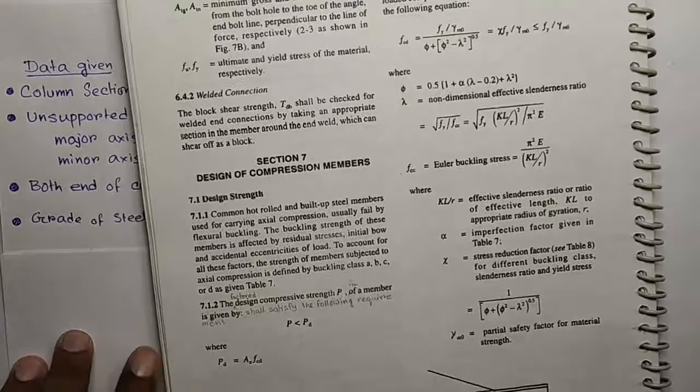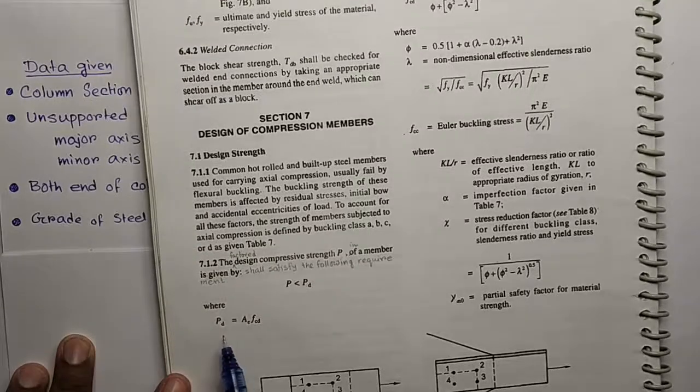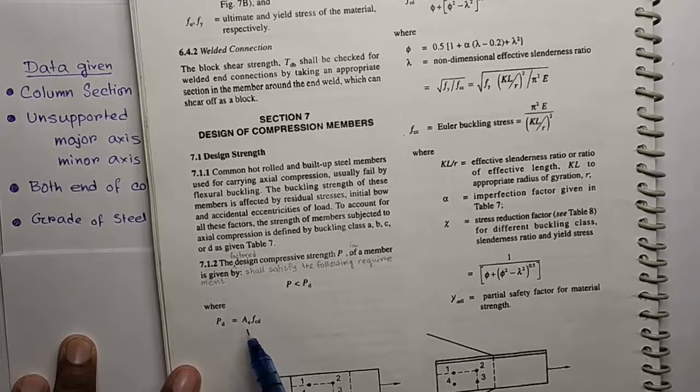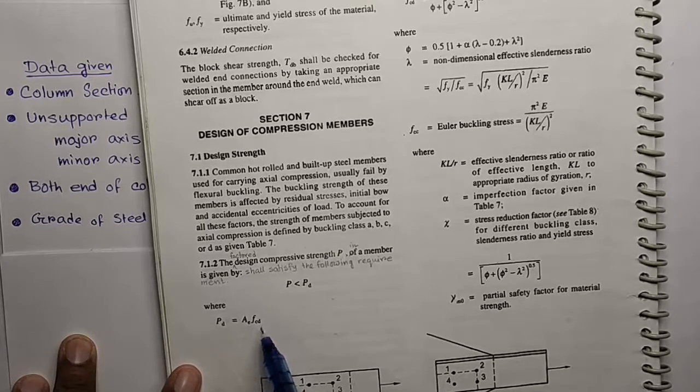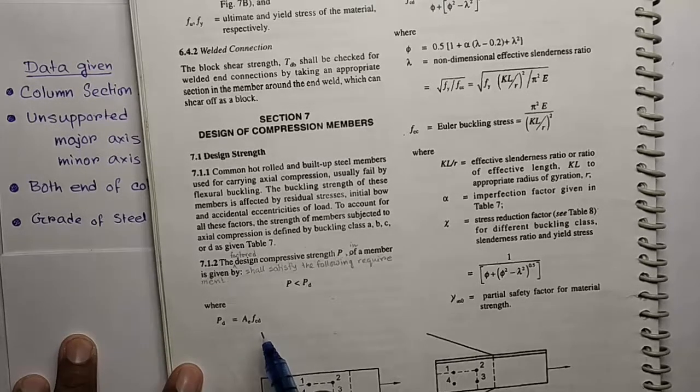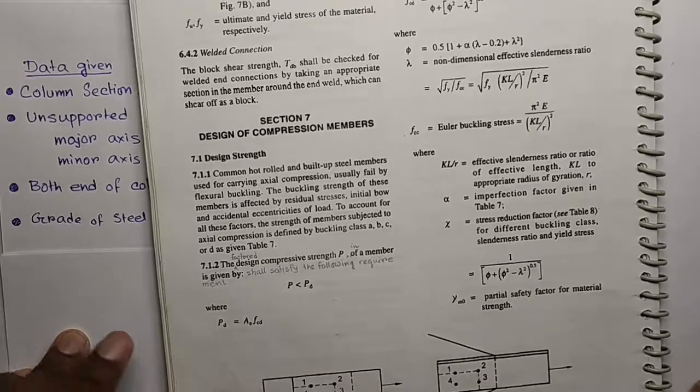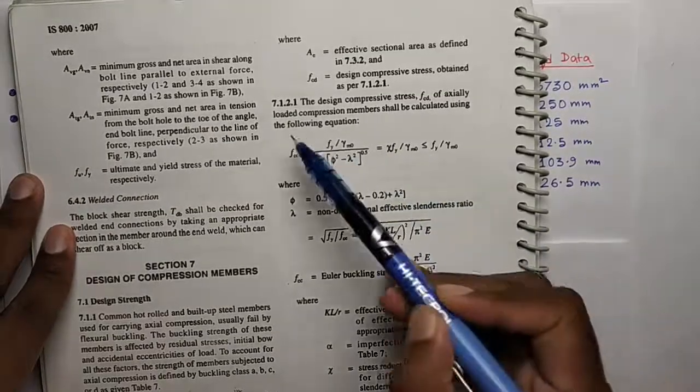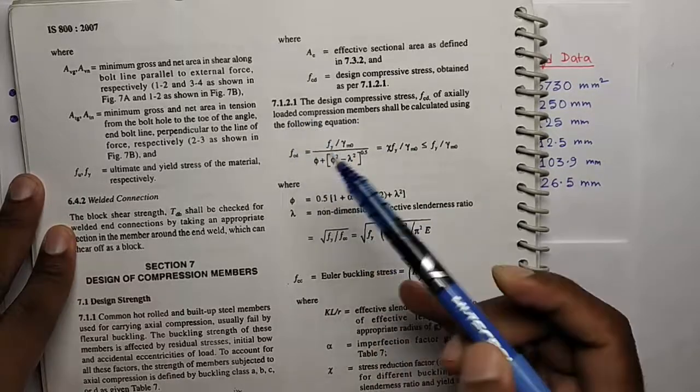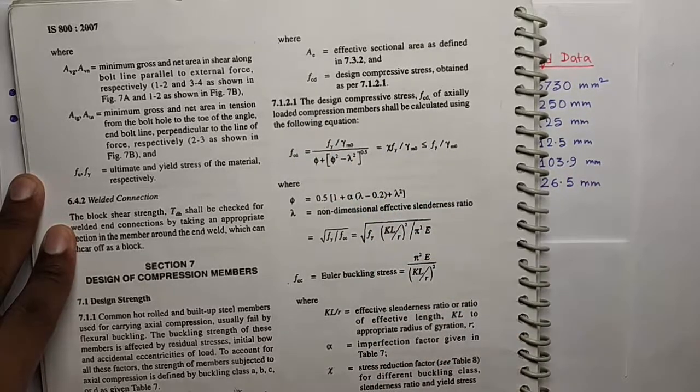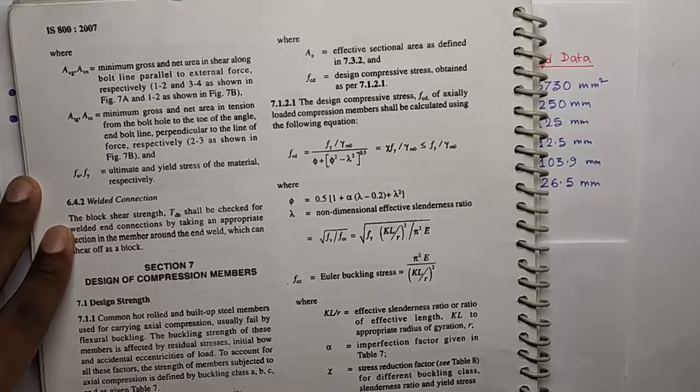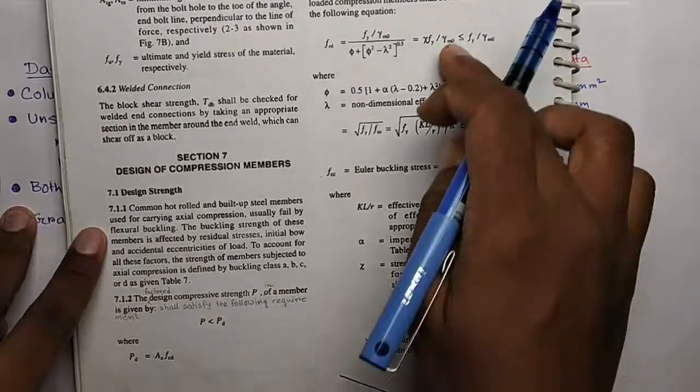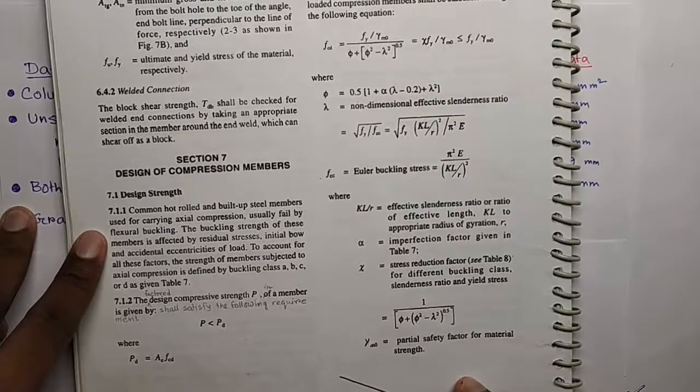In section 7, the PD equals AE into FCD. The AE is the sectional area of the section and FCD is the design compressive stress. We have to calculate this FCD. The detailed procedure to calculate the FCD is given here in 7.1.2.1, we will follow these steps. And there is another method to calculate FCD by using a table given in this code. We first do this detailed calculation and then use the table.